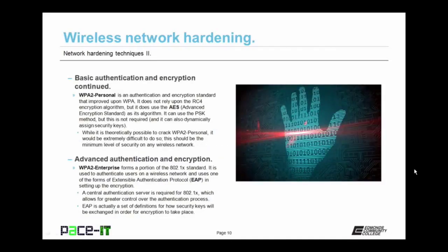Better than WPA is WPA2 Personal, Wi-Fi Protected Access 2 Personal. It's an authentication and encryption standard that improved upon WPA. It does not rely upon the weak RC4 encryption algorithm, but uses AES — Advanced Encryption Standard — as its algorithm. It can also use the PSK method, but this is not required as WPA2 Personal can also dynamically assign security keys. While it's theoretically possible to crack WPA2 Personal, it would be extremely difficult to do so, so this should be the minimum level of security on any wireless network. Better yet, if possible, deploy WPA2 Enterprise.